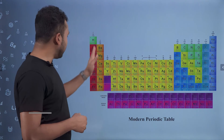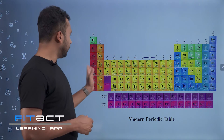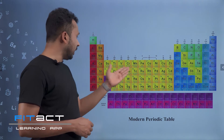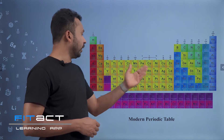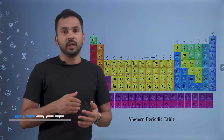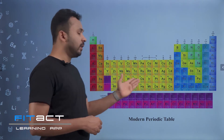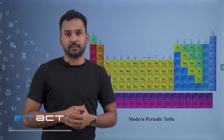These vertical columns are groups. This horizontal row is a period. Here there are 18 groups and 7 periods.